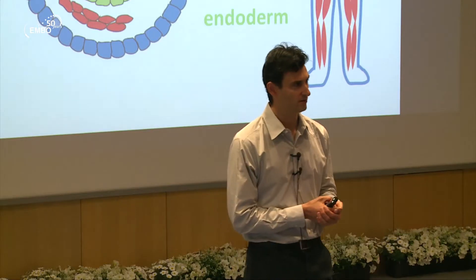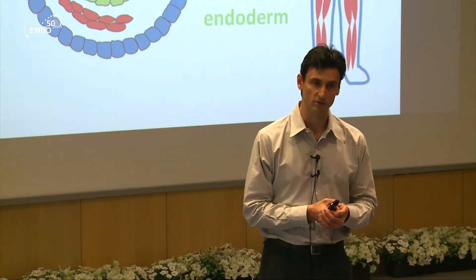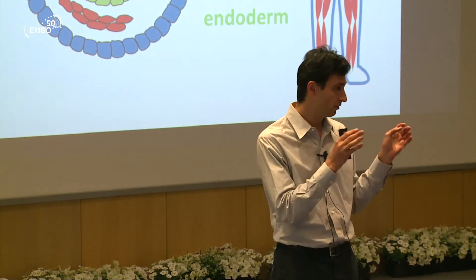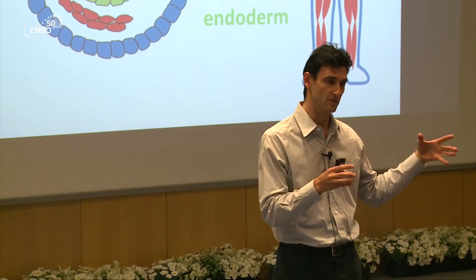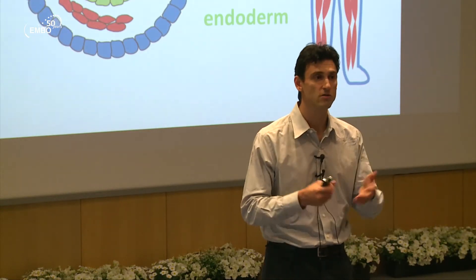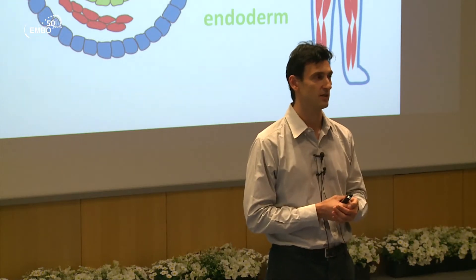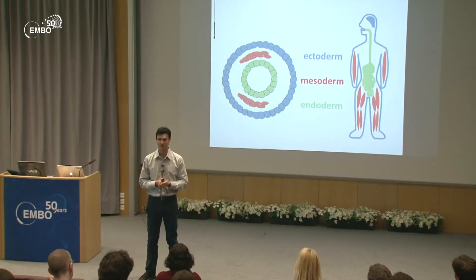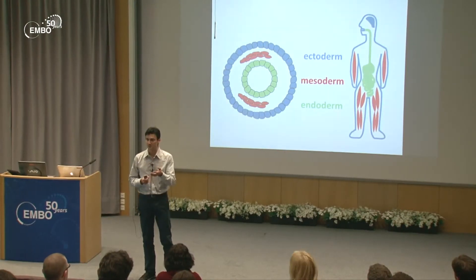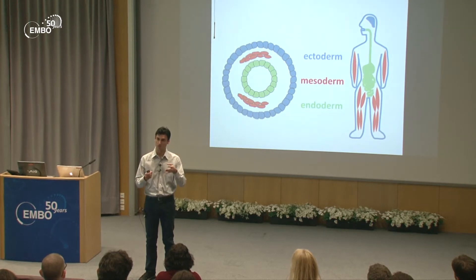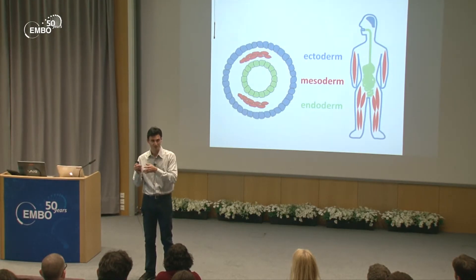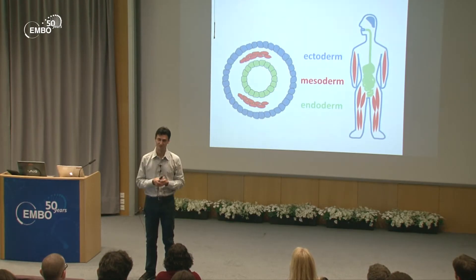What I want to tell you about right now is our work on the origin of germ layers. It's a classical observation that if you look at the embryo there are three germ layers: the inside, the middle, and the outside. For 150 years this has been one of the classical paradigms of developmental biology, evolution, cladistics, and systematics. Medical students remember that the inside is made by the endoderm, the outside by the ectoderm, and the middle layer is the mesoderm.